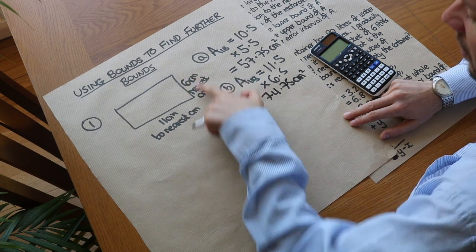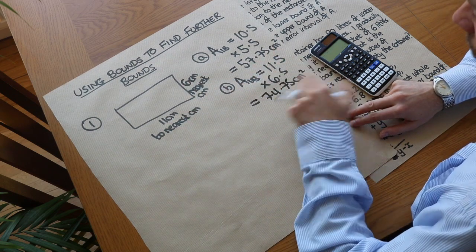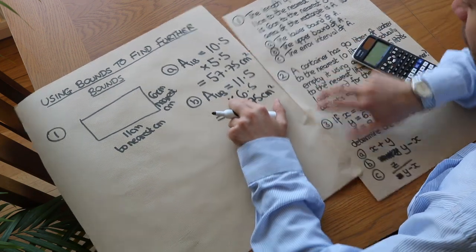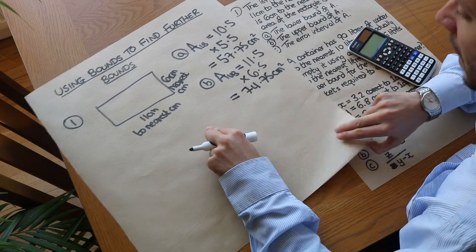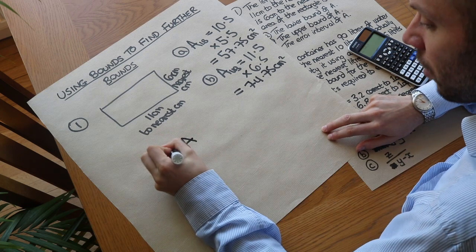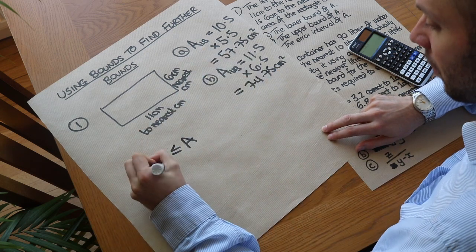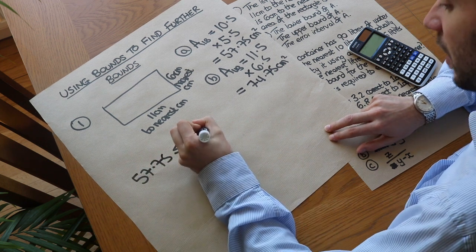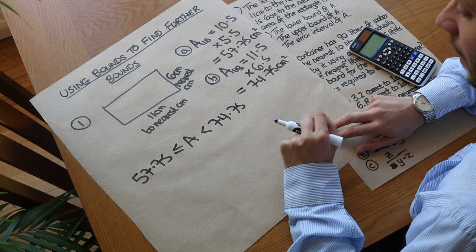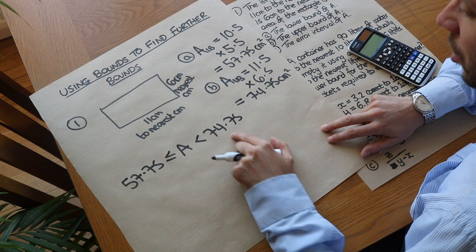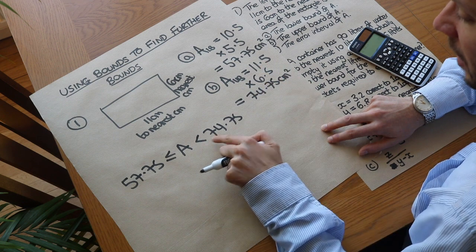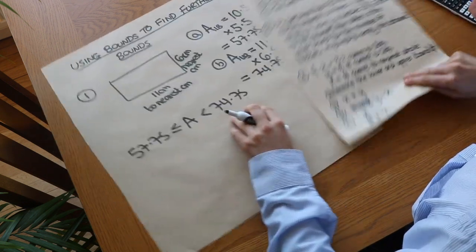With just this information the area of the rectangle could have varied quite a bit. For the last part, find the error interval of A. The error interval is the range of possible values of A: A is greater than or equal to 57.75 and less than — but not including — 74.75, because you can't actually have a length of exactly 11.5.